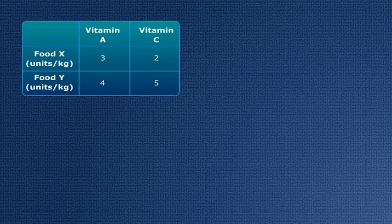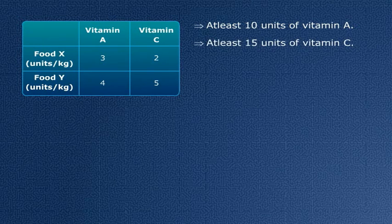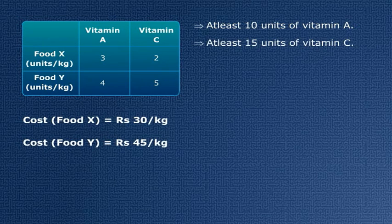Now the dietician wants to mix the two types of food such that in the mixture, the vitamin A content is at least 10 units and vitamin C content is at least 15 units. Now food X costs Rs 30 per kg and food Y costs Rs 45 per kg. The dietician wants to minimize the cost of such a mixture and we need to help him. So what can we do?